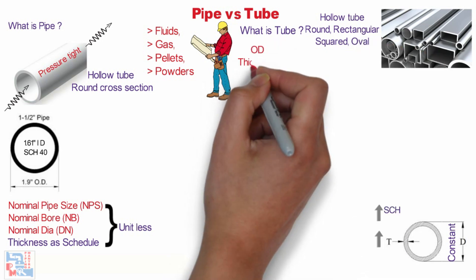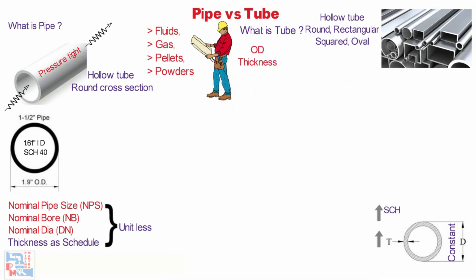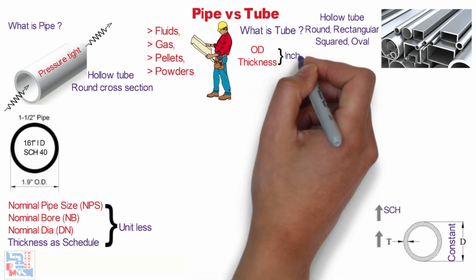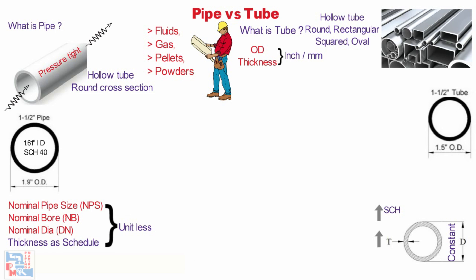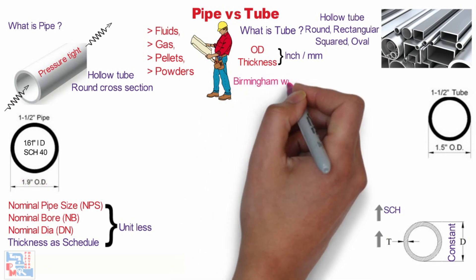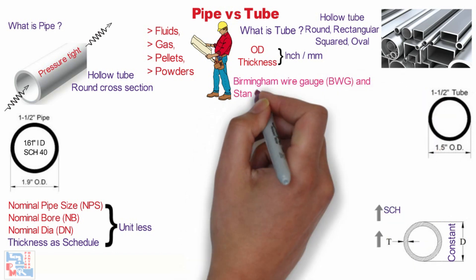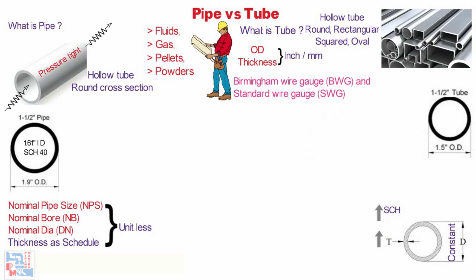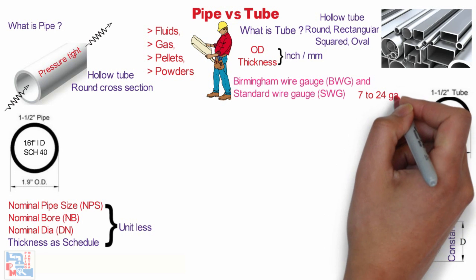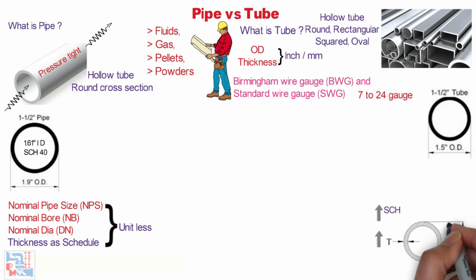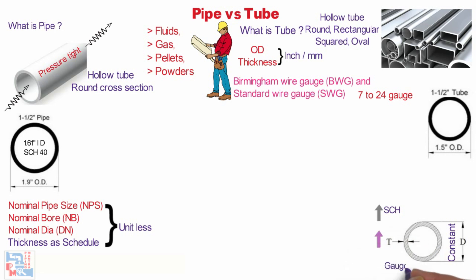Tubes are measured by outside diameter (OD) and wall thickness (WT), expressed as true dimensional values in inches or millimeters. As you can see here, a 1.5 inch tube has an OD of 1.5 inches, whereas in the case of a pipe it was 1.9 inches OD. Usually, the thickness of a tube is specified in gauge — Birmingham wire gauge (BWG) and standard wire gauge (SWG) — ranging from 0 to 36, but in industry we use 7 to 24 majorly. For a given size of tube, the outside diameter stays constant, and wall thickness increases with a smaller gauge number.